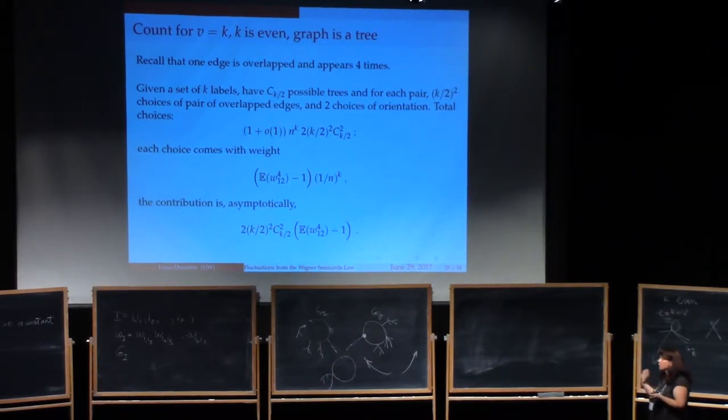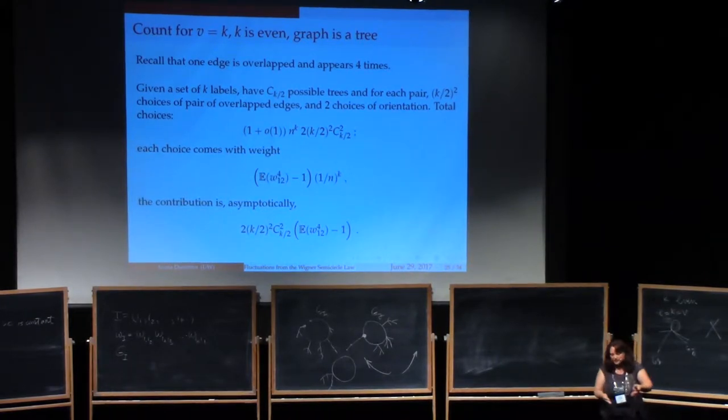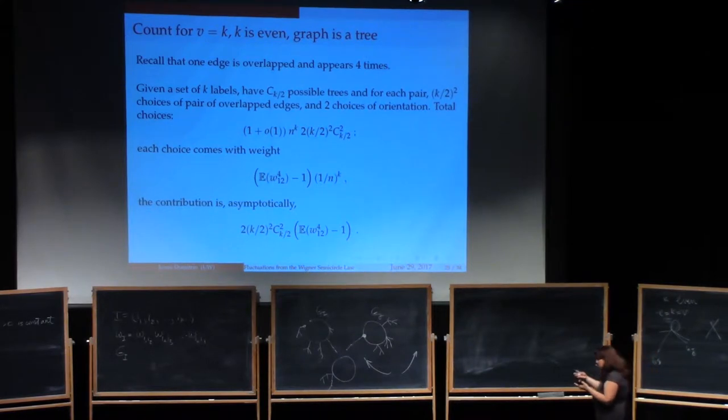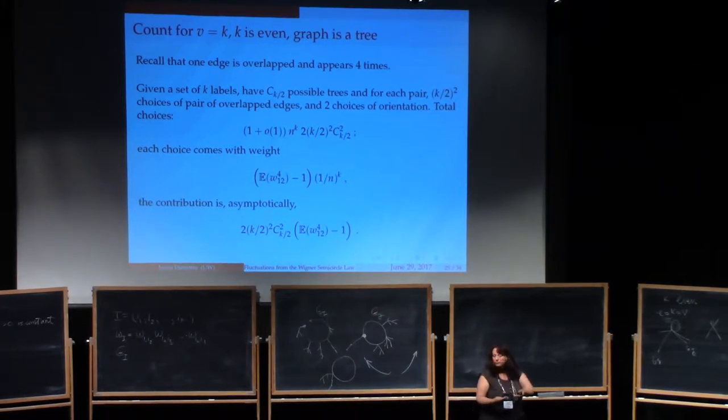But what if the graph is a tree? So recall that that was the other possibility. You have either a graph that has a cycle, in which case you have every edge appearing exactly twice, or you have a graph that's a tree, in which case almost everything is going to appear twice, with the exception of one edge, which will appear four times. So if it's a tree, that means that both the graphs for wi and wj are trees, and what you've done is just overlap them on one edge. That's all.